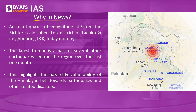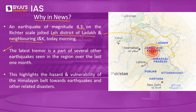The topic is in news because this morning, an earthquake of magnitude 4.3 on the Richter scale hit the Leh district of Ladakh, and the tremors were felt in the neighboring Jammu and Kashmir as well. This latest tremor centered around Ladakh and Jammu and Kashmir is part of a series of earthquakes reported in the region over the last one month. Several similar earthquakes have been registered stretching all the way from Afghanistan to Pakistan to Jammu and Kashmir, Ladakh, and Himachal Pradesh of India. This highlights the hazard and vulnerability of the Himalayan belt towards earthquakes and towards other related secondary disasters.